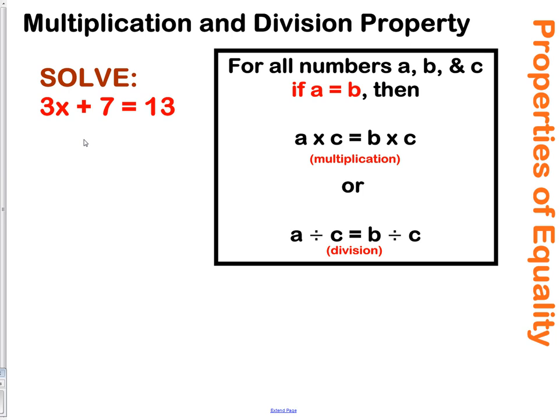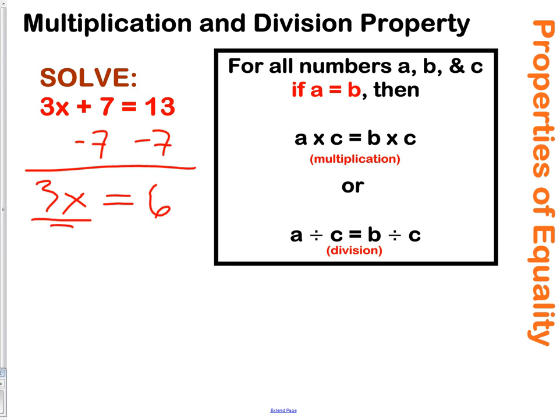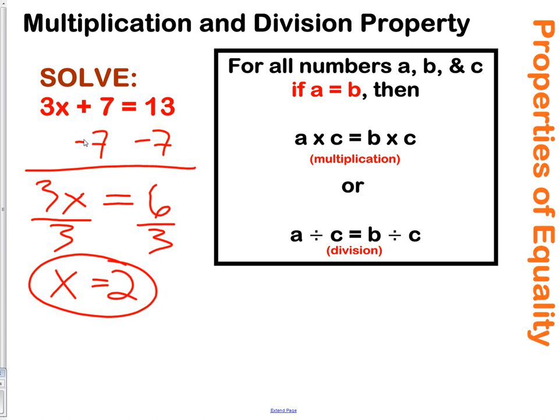The multiplication and division properties are very similar. As long as we have two expressions A times C and B times C being equal to each other, we know the expressions are going to be the same. So we subtract 7 — that's the subtraction property. Now we have 3 times x equals 6. In order to solve this, we use the division property and divide by 3 on both sides, getting x equals 2. So in this one question, we used the subtraction property and the division property.